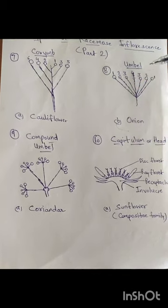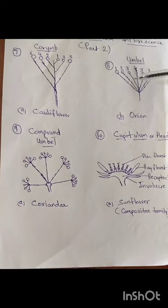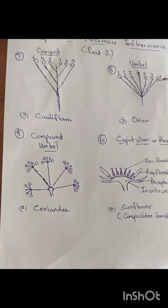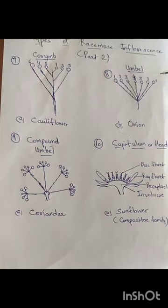The next is the umbel. The main axis of the corymb grows more short. At the same point, the corymb grows. The pedicels are same size. This is the shape of the umbrella. This is the umbel.